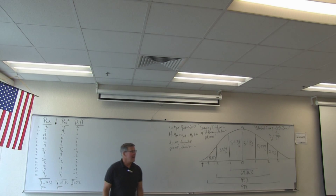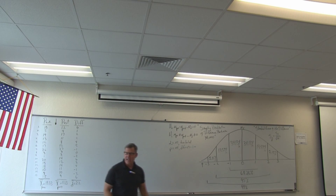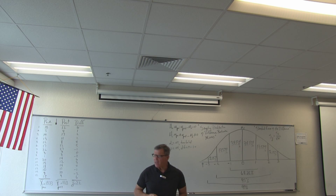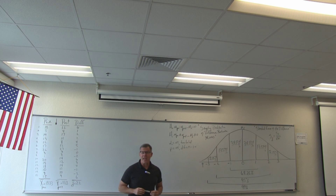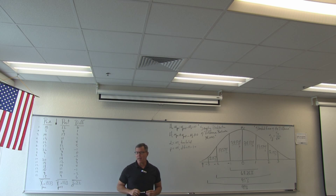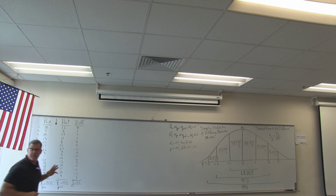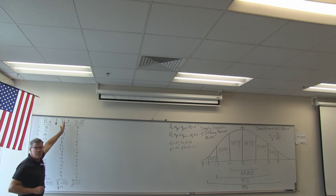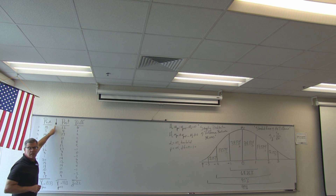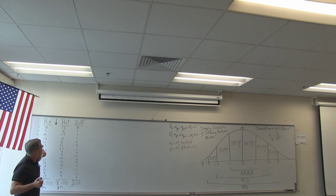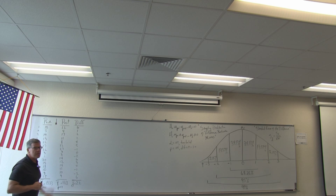Good morning. Welcome to our second lecture on the repeated measures design — this is hypothesis test number three. This is a situation where we have one group of subjects measured twice: pre-test, post-test, with a treatment in the middle. We're going to be dealing with experiments, looking for a significant difference between the pre-test and the post-test.